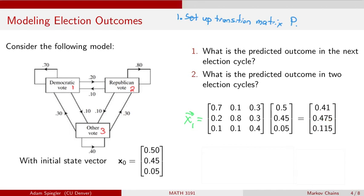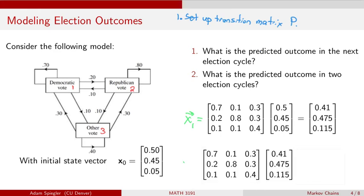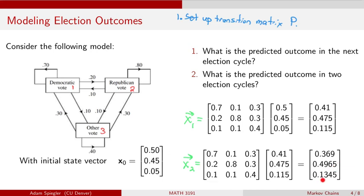To predict results two election cycles from now, we repeat this iterative process: we take X1 and multiply it by the same transition matrix to get X2. Republicans are picking up even more votes. The Democratic candidate would win 36.9% of the vote, the Republican candidate wins 49.65%, and other candidates are also picking up a larger share at 13.45%. These are all predictions based on the probabilities given initially.